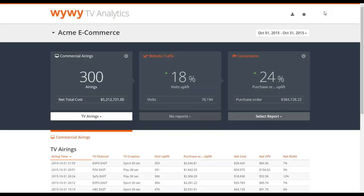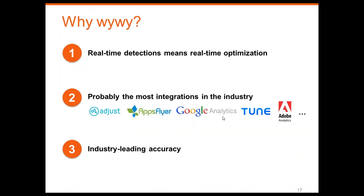So that was the dashboard — now jumping back to the presentation. Generally speaking, why should you choose YY? In our opinion, there are three reasons. First, our system provides real-time ad recognition, which allows you to optimize your TV campaign in real-time. You don't have to wait weeks for post-airing logs, there's no need for manual upload — everything is automated, making our system hassle-free.